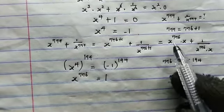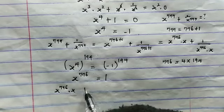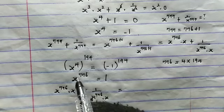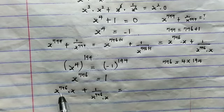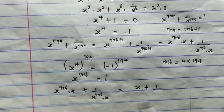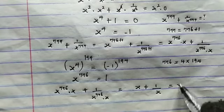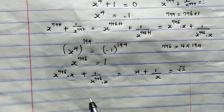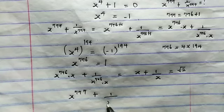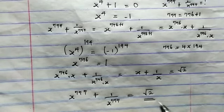Going back to the expression: x to the power of 776 times x plus 1 over x to the power of 776 times x. Since x to the power of 776 equals 1, this becomes 1 times x plus 1 over 1 times x, which simplifies to x plus 1 over x. From the original equation, x plus 1 over x equals root 2. So the solution is: x to the power of 777 plus 1 over x to the power of 777 equals root 2.